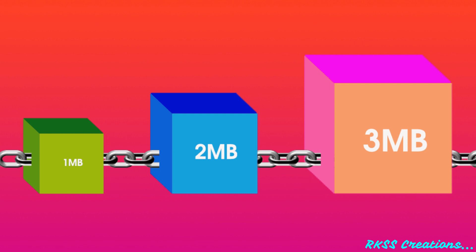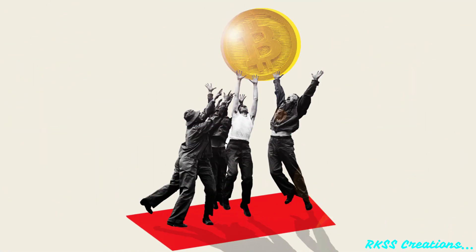That's because each block contains its own hash along with the hash of the block before it, as well as the previously mentioned timestamp. Hash codes are created by a math function that turns digital information into a string of numbers and letters. If that information is edited in any way, the hash code changes as well. Here's why that's extremely important to security: if a hacker wants to alter the blockchain and steal Bitcoin, altering their own single copy would mean it no longer aligns with everyone else's copy.